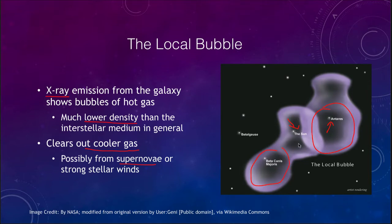Our Sun just happens to be located in or very near to one of those bubbles right now. Very strong stellar winds from extremely massive stars could do something very similar. This is an important part of the interstellar medium that we want to look at more closely.